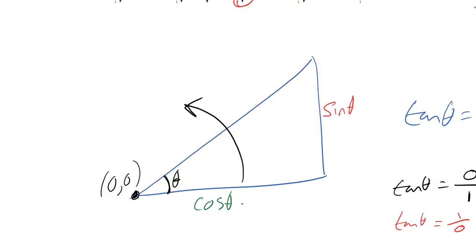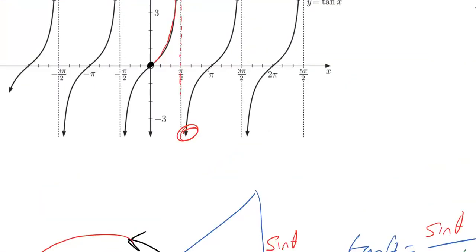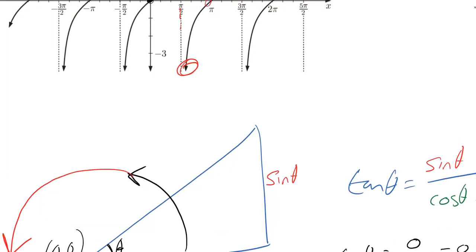But as we bring the function round and we carry on going around again and again and again, we're going to get back to that same old problem we had at theta is equal to zero. We're going to end up with a very very small, in fact a zero sine theta coordinate, so we're going to have zero over one again at that point which brings us back to zero.